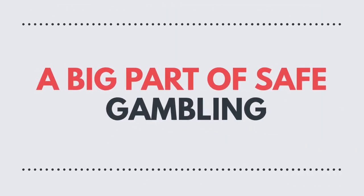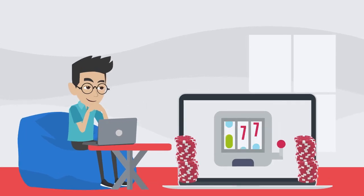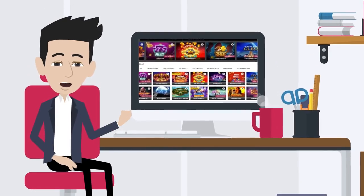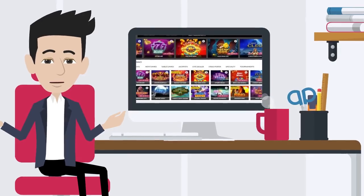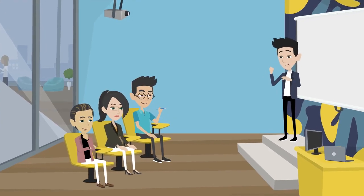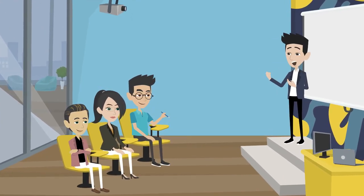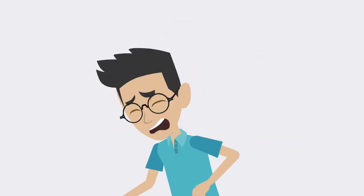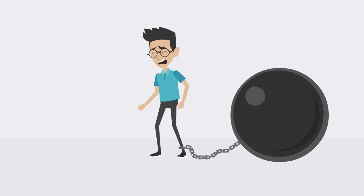A big part of safe gambling is understanding that gambling is not a way of making money. Casino games are configured to give the casino an edge, and there's nothing that you can do to change this as a player. It's important to understand this because if your goal is to make money, you will more than likely find yourself in trouble sooner or later.